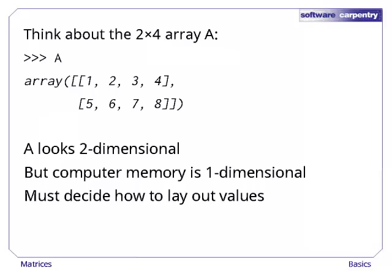What order do ravel values appear in? Let's start by thinking about a 2x4 array. It looks two-dimensional, but the computer's memory is one-dimensional. Each location is identified by a single integer address. Any program that works with multidimensional data must therefore decide how to lay out those values.